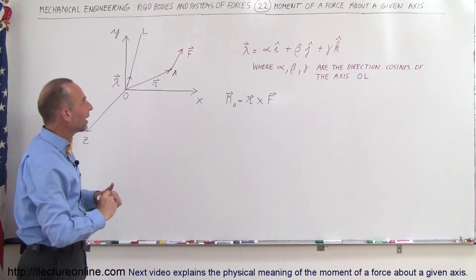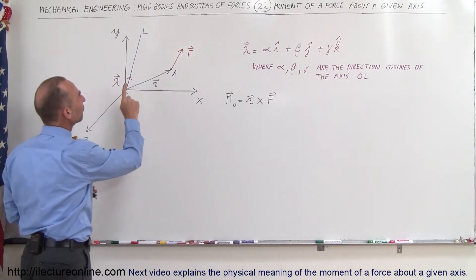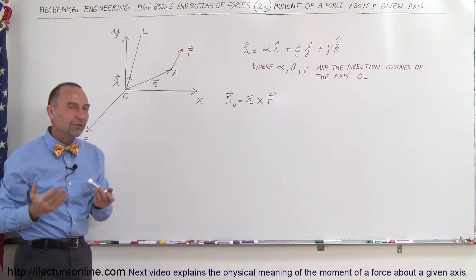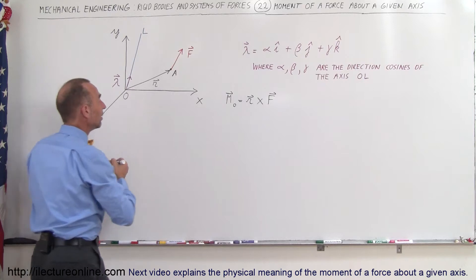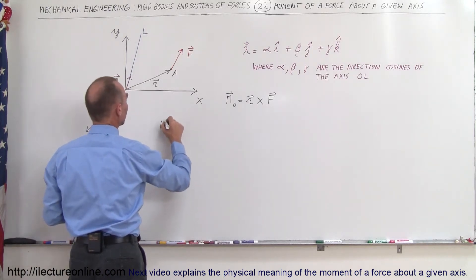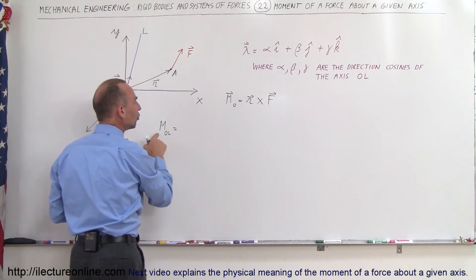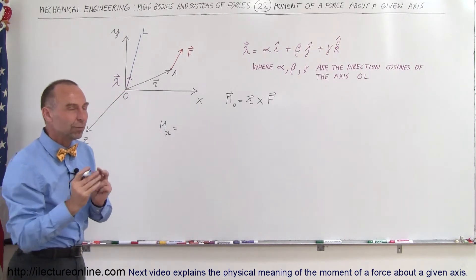Now we don't want to find the moment about point O; we want to find the moment about the axis from O to L. So how do you find that? The moment about the axis from O to L—notice it's no longer a vector quantity, it's a magnitude.